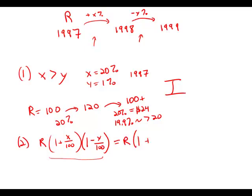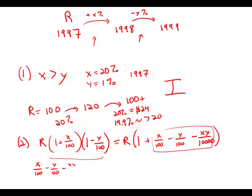So we get 1 plus X over 100 minus Y over 100 and then minus XY over 10,000. And of course we want to know is this bigger than R or not. So really the question we're asking is, is this piece here bigger than zero? So X over 100 minus Y over 100 minus XY over 10,000. Is that bigger than zero?